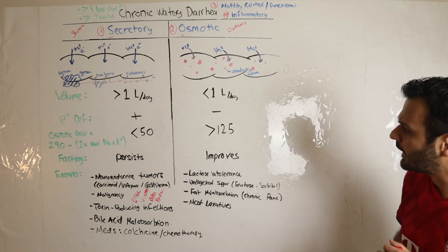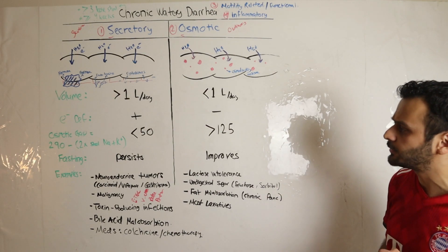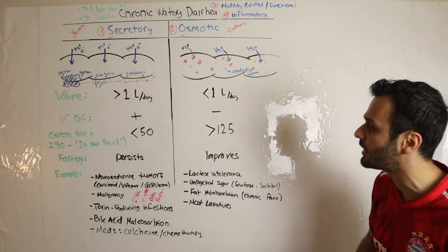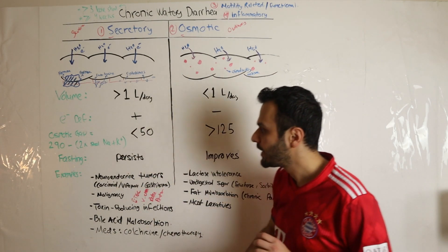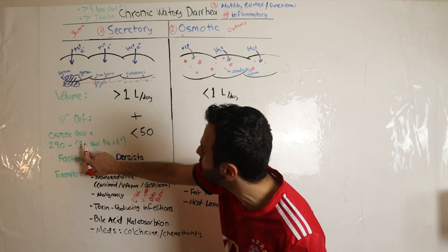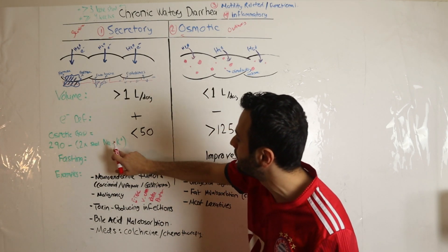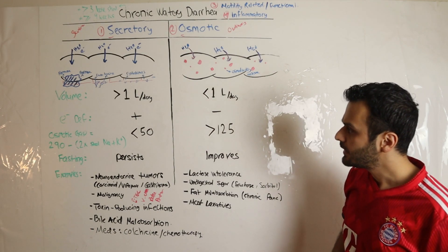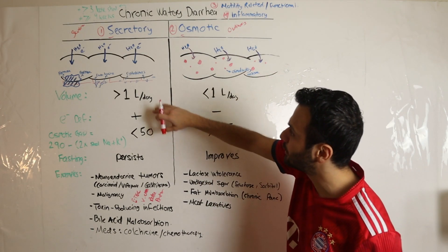The last thing I want to talk about, which is extremely important for your board examination, is osmotic gap. They like to ask about it a lot. You have to remember this equation: 290 minus 2 times (stool sodium plus stool potassium).